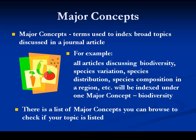So all the articles discussing biodiversity, species variation, species distribution, species composition in a region, and so on will be indexed under one major concept term: biodiversity. There's a list of major concepts in Biosis that you can browse or search to check if the topic you're interested in is listed.